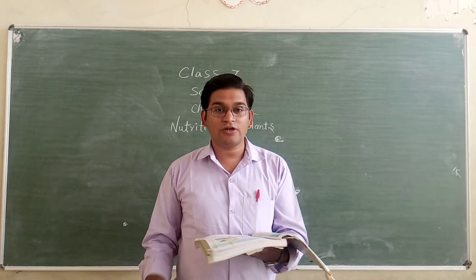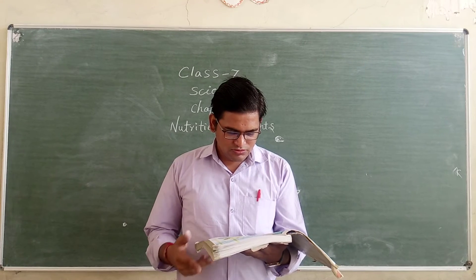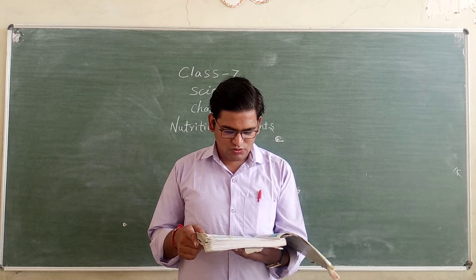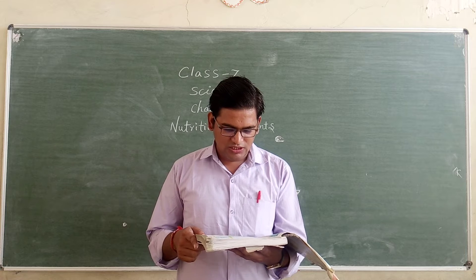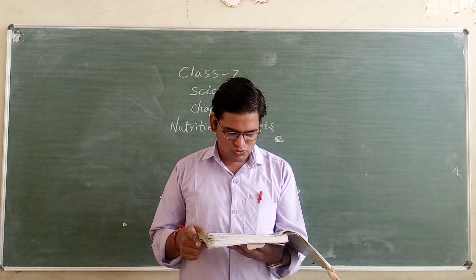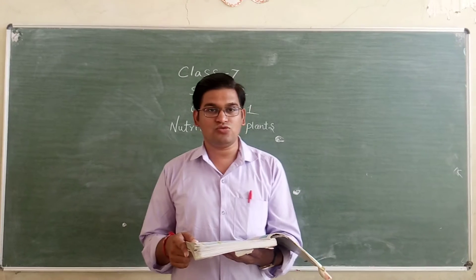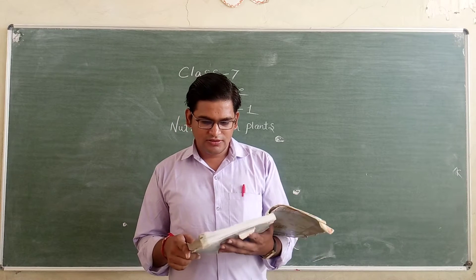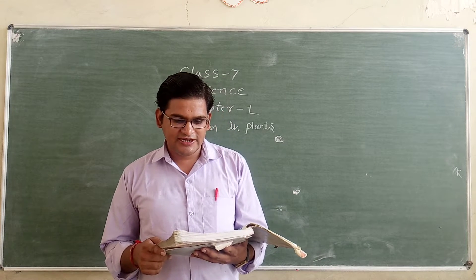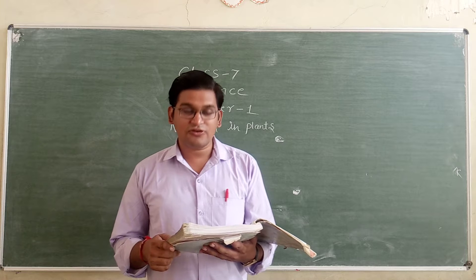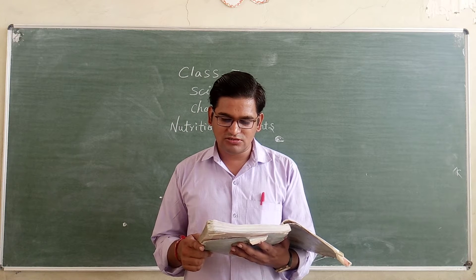Look at figure 1.2 — chlorophyll, guard cell, stroma, and a section through a leaf. There are stomata openings, and here is light energy. In figure 1.3, we can see carbon dioxide and oxygen.